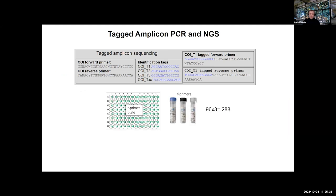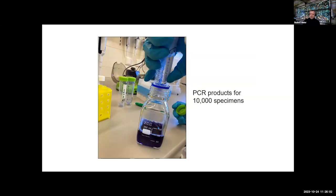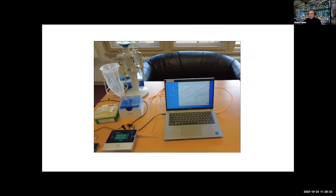How do we pool 10,000 PCR products and still assign them to individual specimens? That is done using tagged amplicon sequencing. The forward and reverse primer each have a tag. If you have a 96-well plate with individually different tags per well and three tagged forward primers, you can produce 288 different combinations; with 200 different forward primers, you can do 20,000 combinations. Afterwards, you pool all PCR products and assign sequencing reads back to specimens using the tag combinations. You only have to clean up a very small proportion for sequencing.